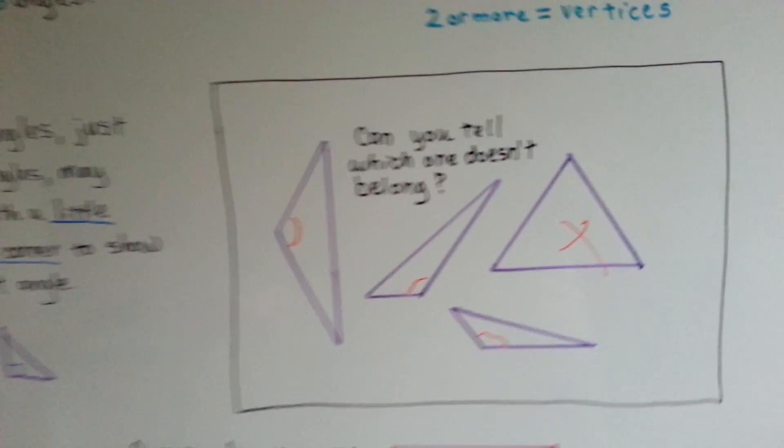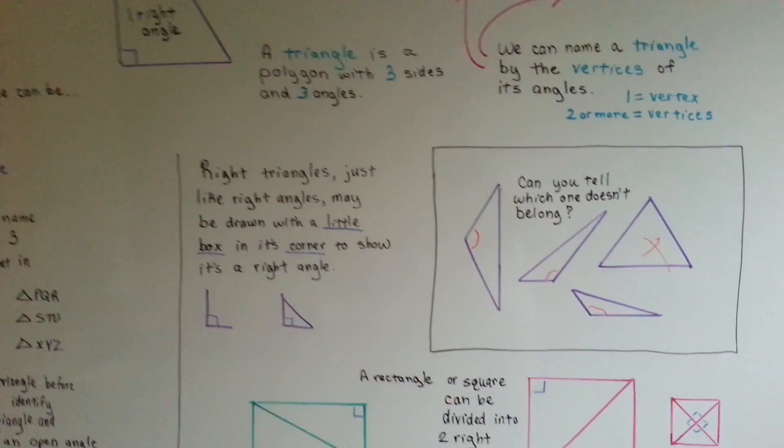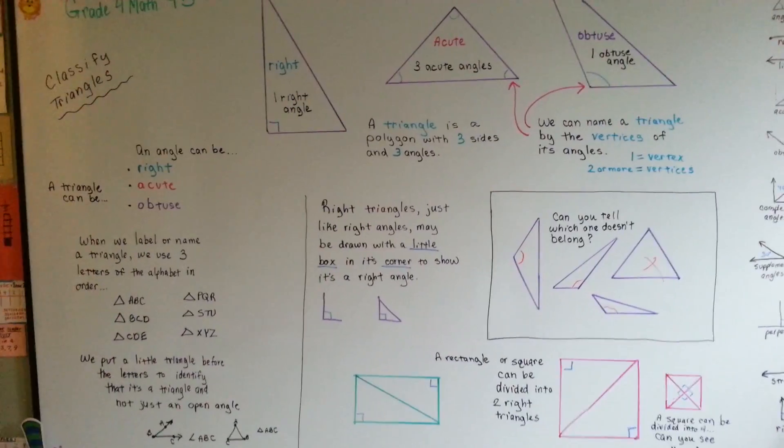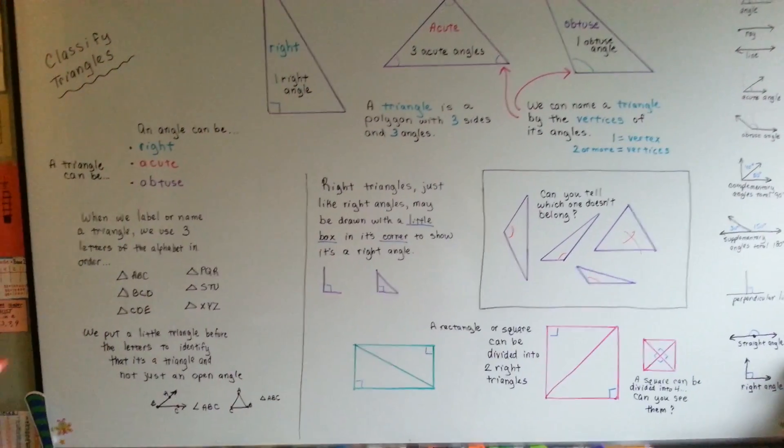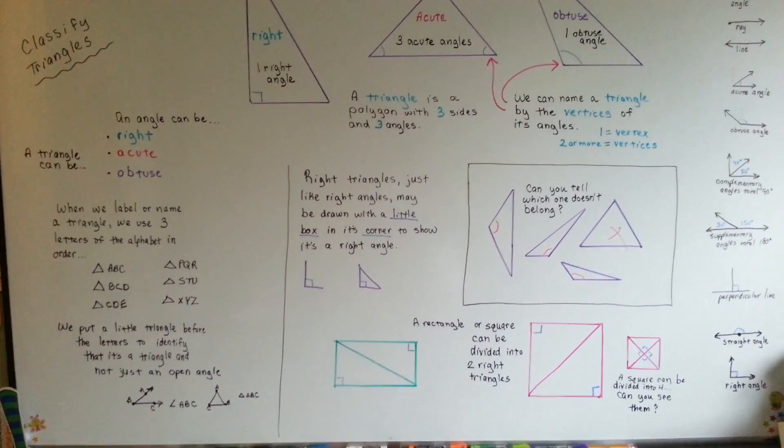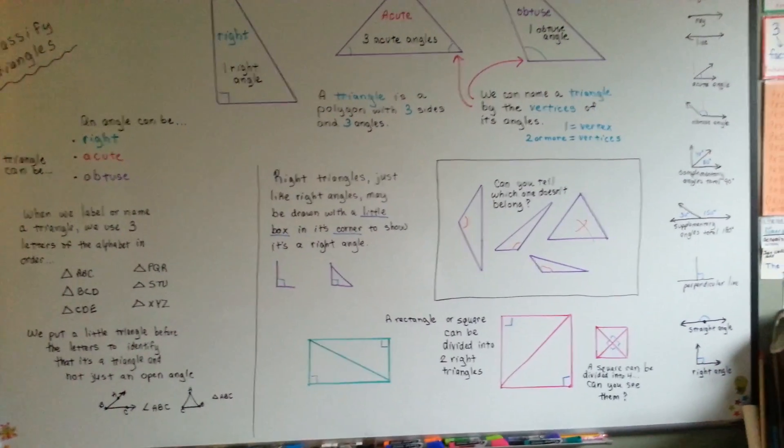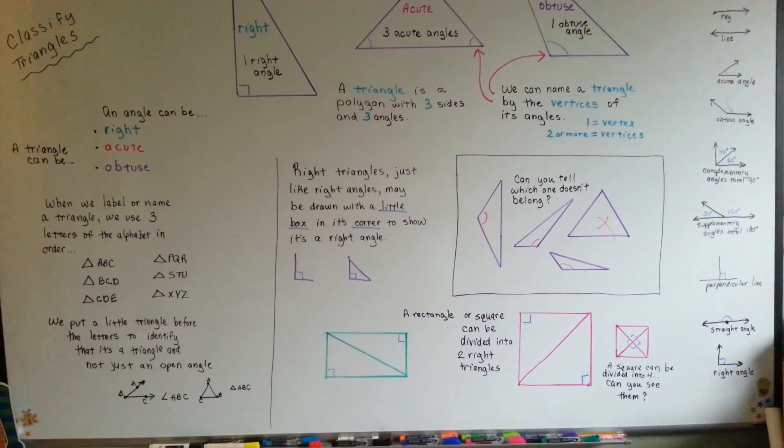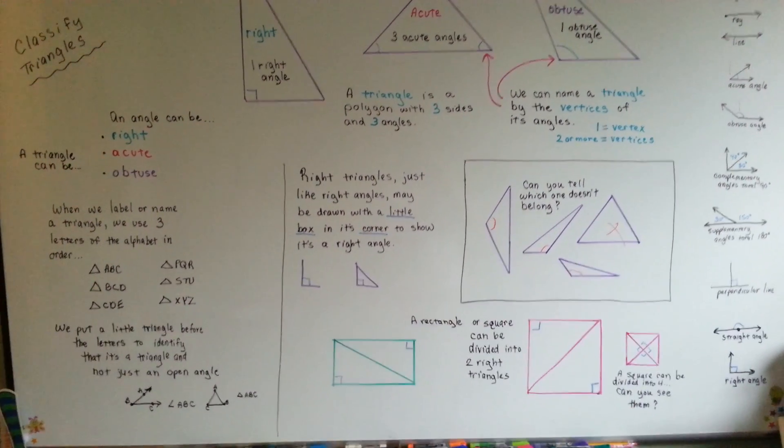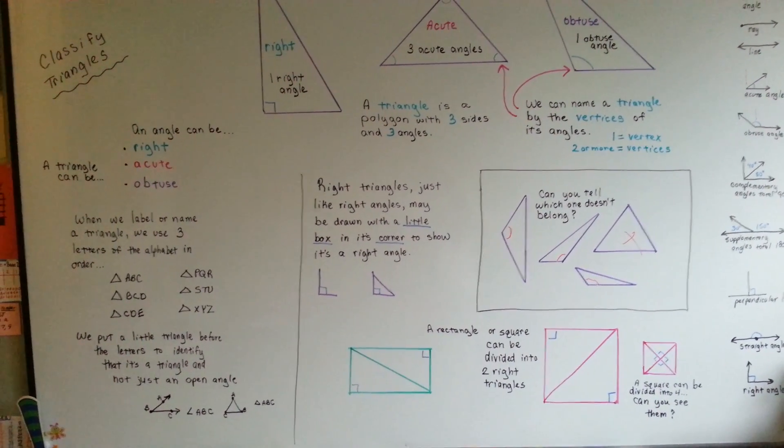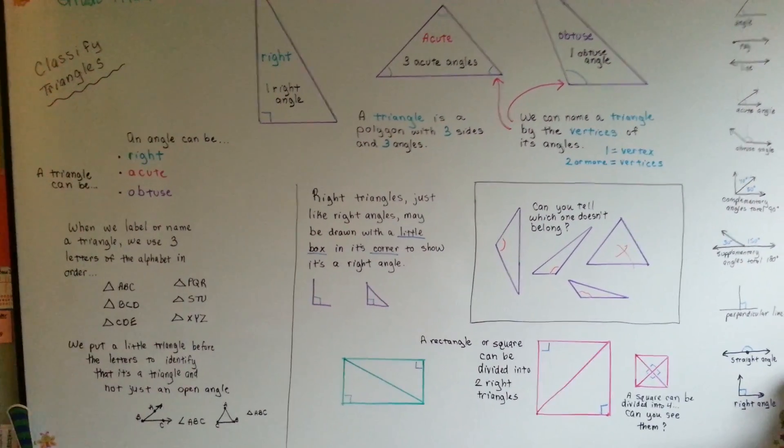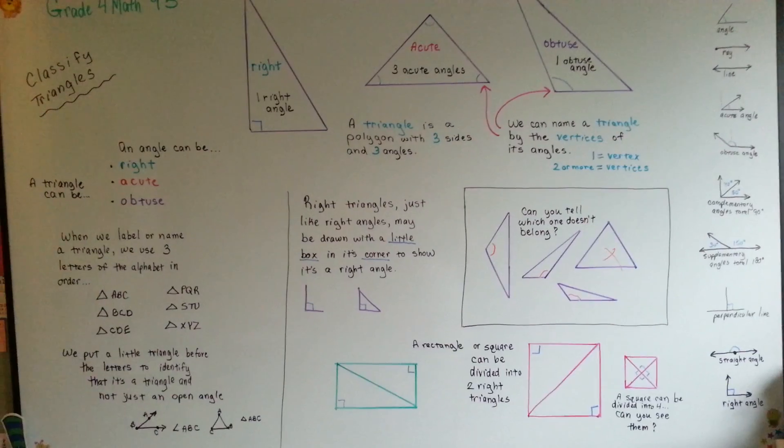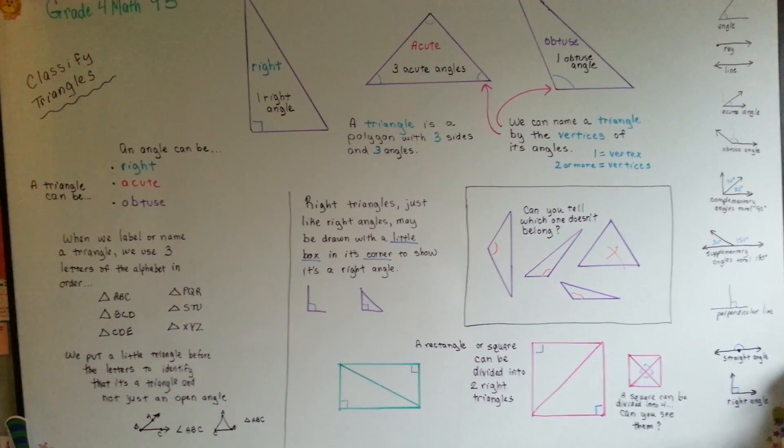Alright, so now you know the difference between a right triangle, an acute triangle, and an obtuse triangle. And you know to put the little triangle symbol in front of the letters when you label it. And you know that the little box means that it's a right triangle. And we're going to talk about parallel lines next. Keep working, keep up the good work, keep trying, and I'll see you next video. Bye.